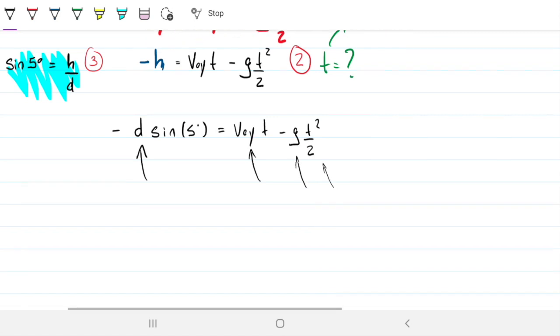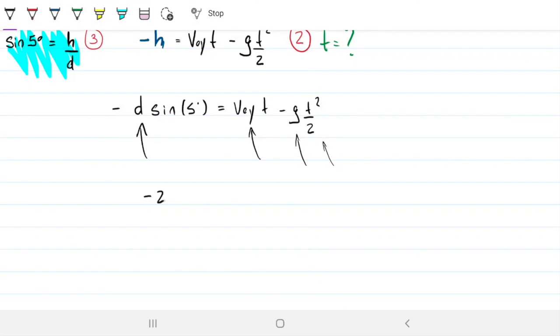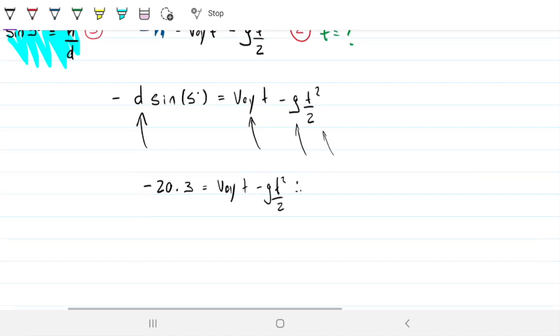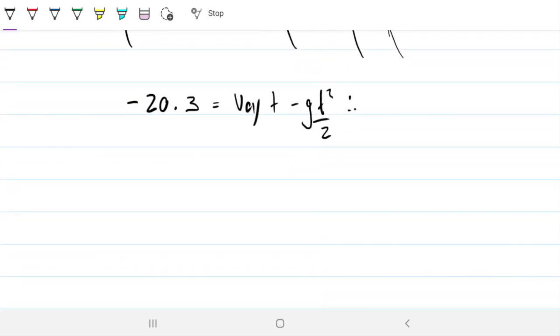What we end up getting on this equation is that minus 20.3 equals VOY t minus g t squared over 2. And if I take a step further, that is the same as 4.9 t squared minus 21.3 t minus the 20.3 from h, which equals 0.